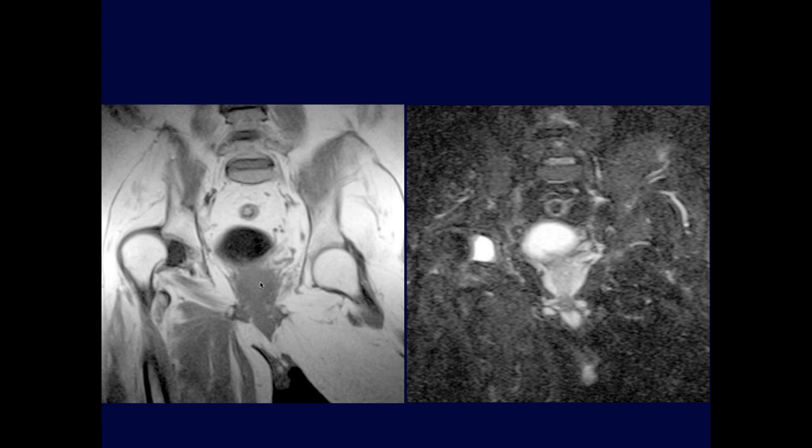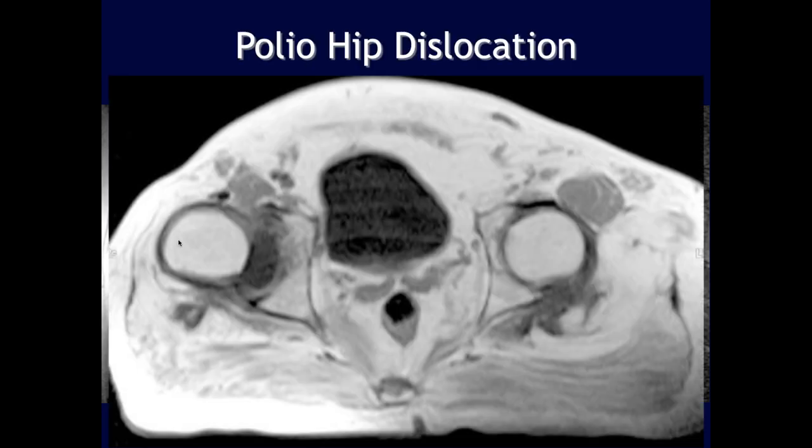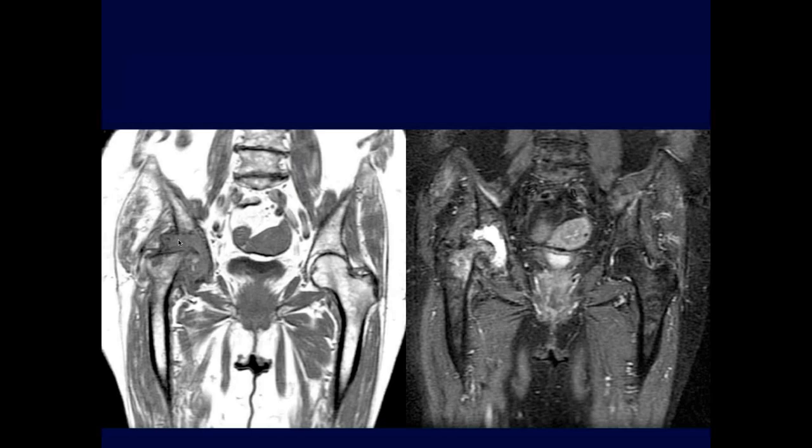Here's another case of polio where dislocations can also be seen due to the loss of muscle control.